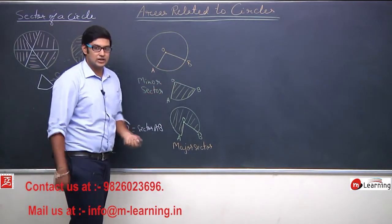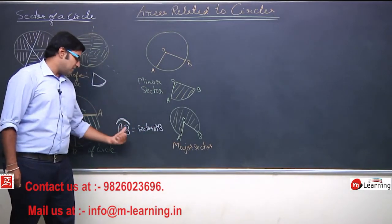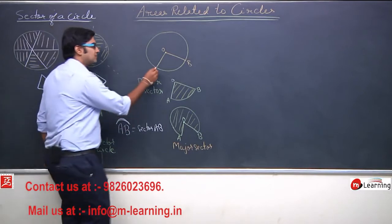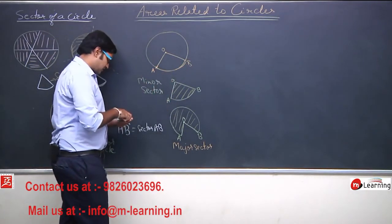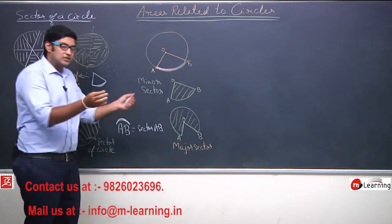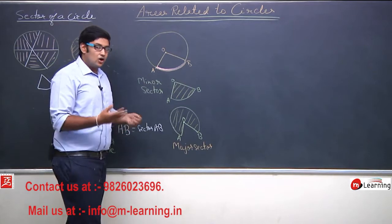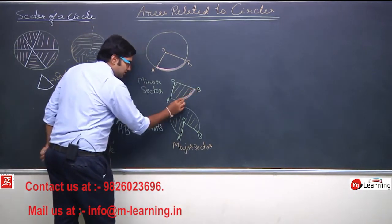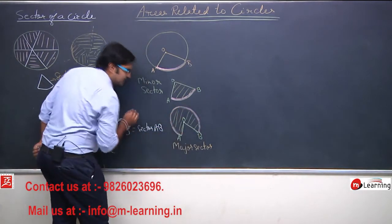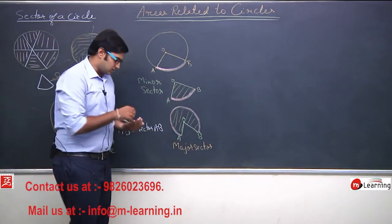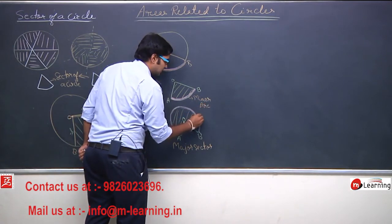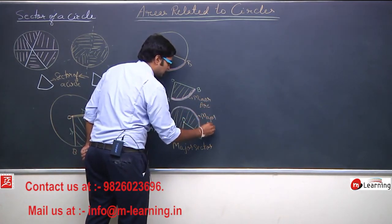Because AB is the arc of the circle. Hum arc ko is tarah se represent karte hain. AB arc se AB sector bana hai. This is the arc of the circle. Ab main AB arc ko ye wala bhi bata sakta hun aur main keh sakta hun yeh bhi AB arc hi kahlayegi. Bas difference ye hai — this is the minor arc and this is the major arc.